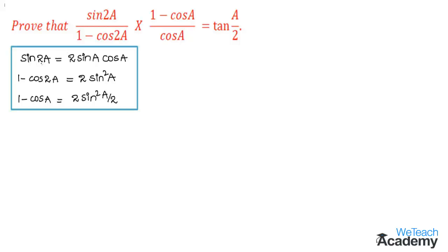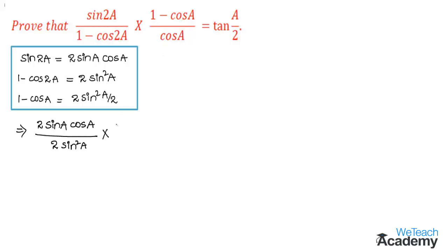By using all these formulas, we get sin 2a written as 2 sin a cos a, divided by 1 minus cos 2a which is 2 sin squared a, into 1 minus cos a which is 2 sin squared a by 2, divided by cos a.